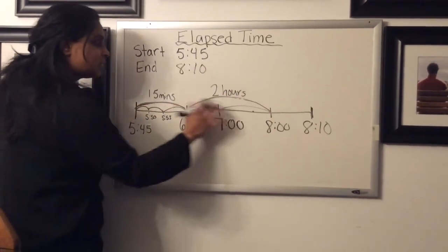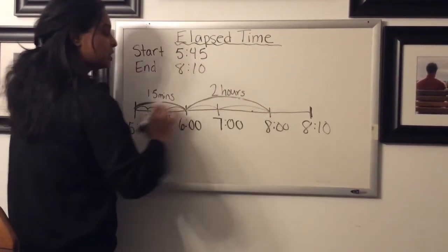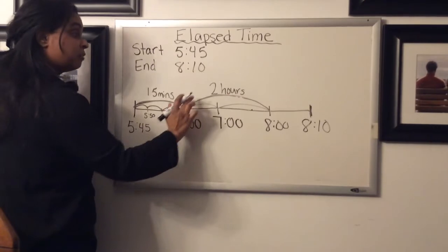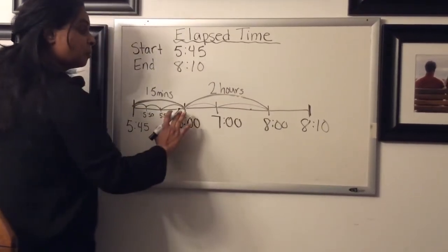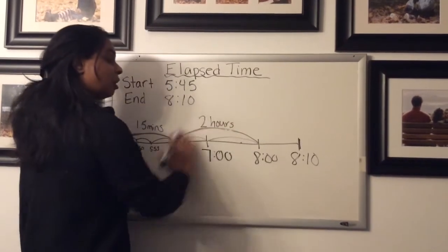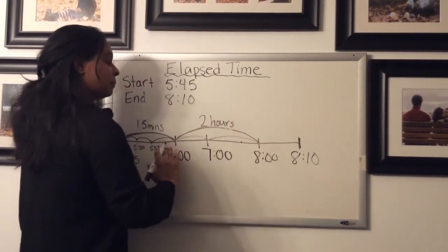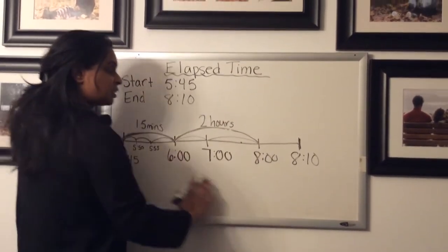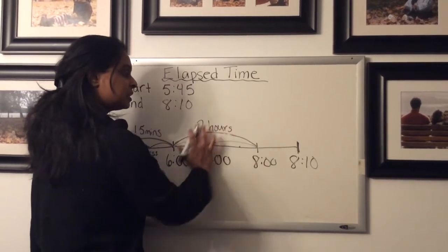Now you don't have to do these little jumps if you know right away how much the big jump is from one of your times to the next. So the reason we're counting up by hours is because we can combine them all and then count up the extra. So from six o'clock to eight o'clock, that's two hours here.